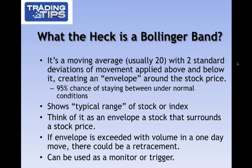Those two lines represent a two standard deviation move in the stock per day. A standard deviation basically tells us the probability, statistically, of a stock moving one way or the other. With the Bollinger Bands and their typical setup, it's usually about a 95% chance the stock is going to stay between those two lines — that sort of envelope.